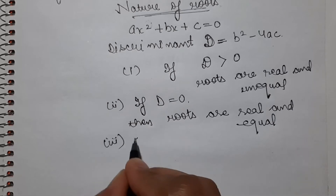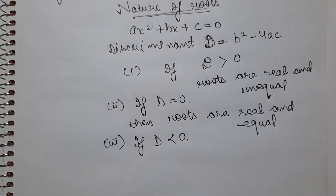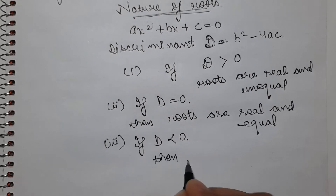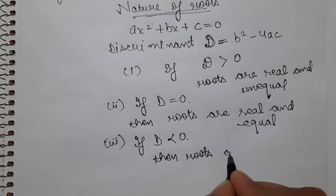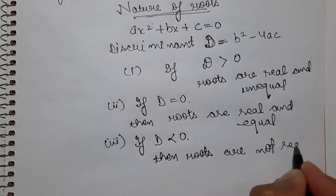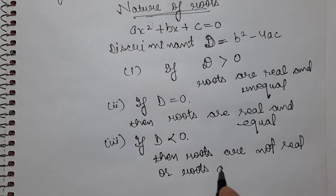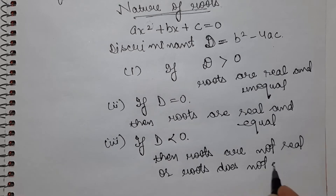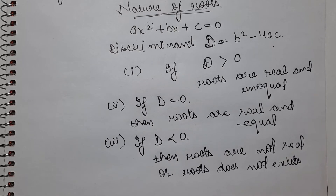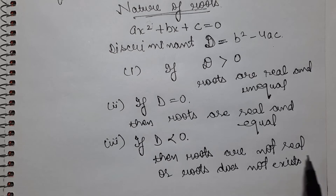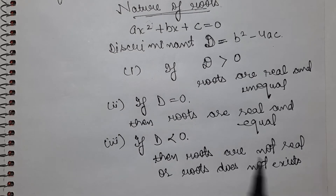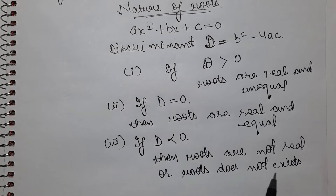The third condition: if D is negative, meaning D is less than 0 — for example minus 1, minus 3, minus 2, minus 100 — then roots are not real. We say roots do not exist. Because in the real number system, which includes all rational, irrational, prime, composite, odd, even, natural, whole numbers, if roots are not real, they cannot exist.